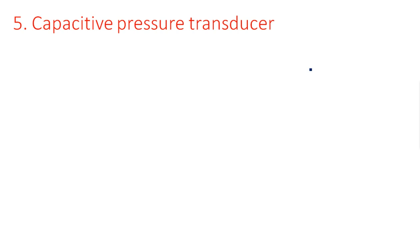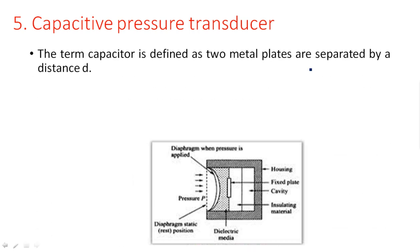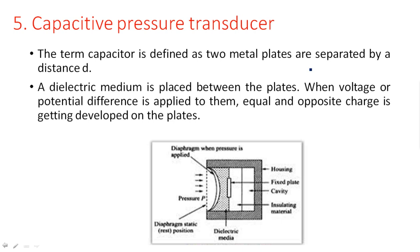Coming to the last type: capacitor pressure measurement. A capacitor is defined as metal plates separated by a distance d, with a dielectric medium placed between the plates. When voltage is applied, equal and opposite charges develop on the plates. The basic formula is C = εA/d, where ε is permittivity (ε_r × ε_0), A is area of the plate, and d is the distance between the plates.